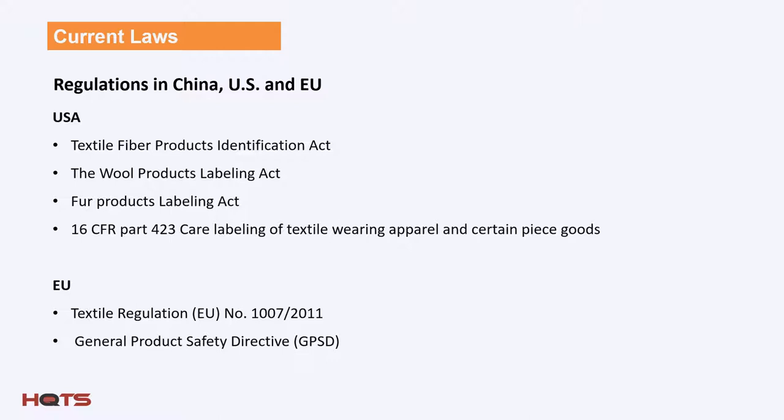For your reference, the major laws and regulations set forth for labeling in the USA are found in the Textile Fiber Products Identification Act, the Wool Products Labeling Act, the Fur Products Labeling Act, and 16 CFR Part 423, which is the care labeling of textile wearing apparel and certain piece goods. In the EU, the laws are set out in the textile regulation and the General Product Safety Directive. In China, the Product Quality Law of the People's Republic of China and under China's GB law, including GB/T 5296.4 Instructions for Use of Products of Consumer Interest, especially Part 4 Textiles and Apparel. Many other countries have followed the lead of these major entities — the USA, EU, and China — and have adopted matching and/or similar regulations.